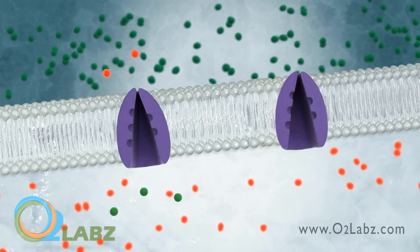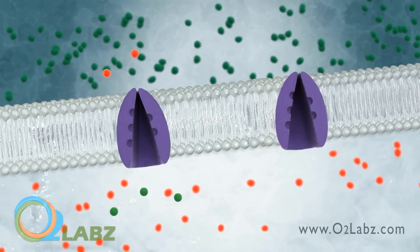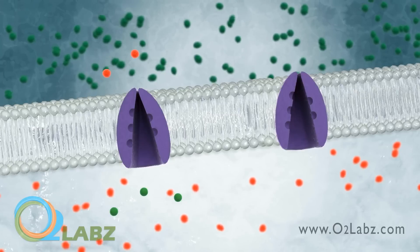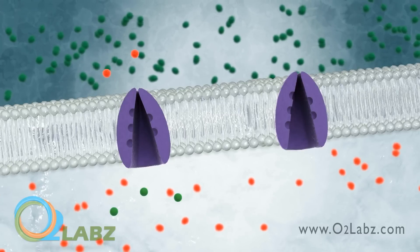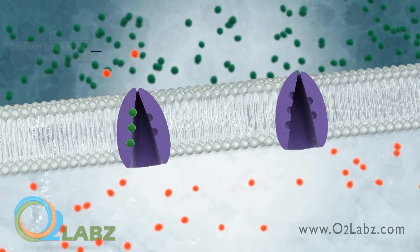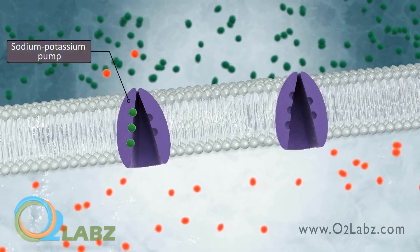An ion pump is a type of membrane transport protein. It requires energy to push ions from an area of lower concentration into an area of higher concentration. The ion pump most important in the maintenance of membrane potential is the sodium-potassium pump.